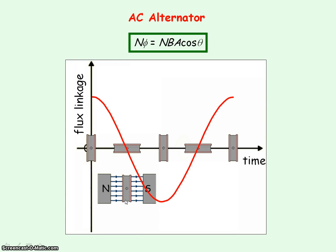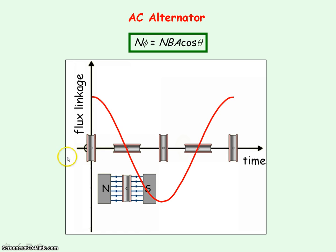This diagram represents a coil of wire of N turns, an area A, which is rotating inside a magnetic field of flux density B. The graph of flux linkage against time follows a cosine shape.